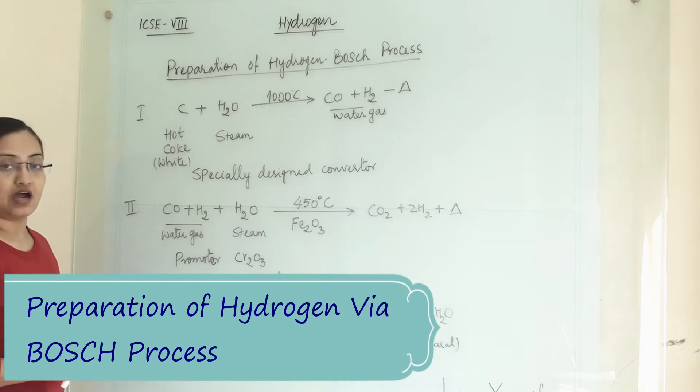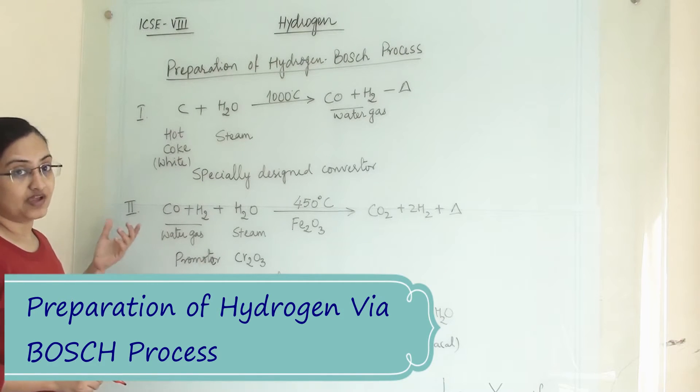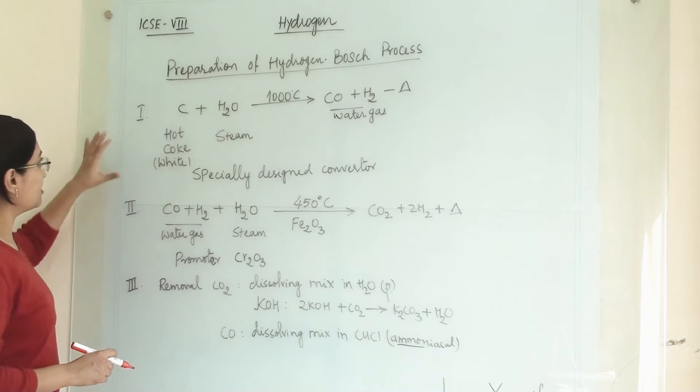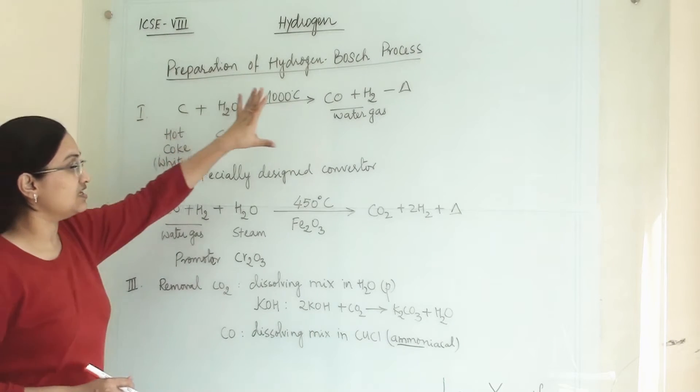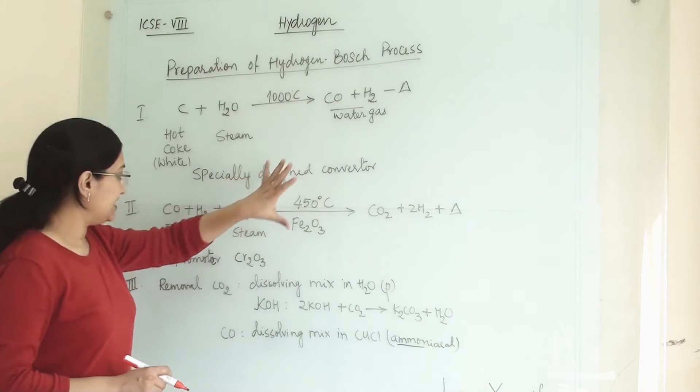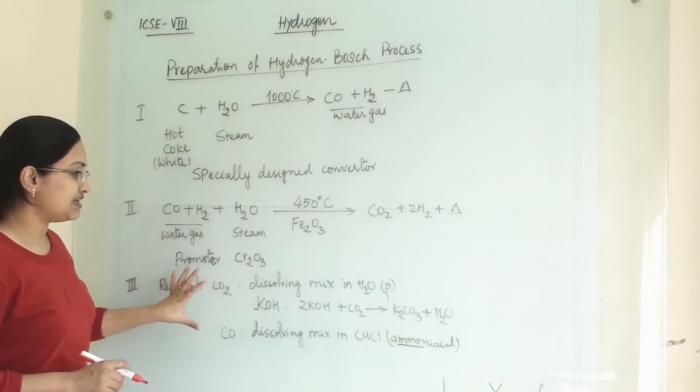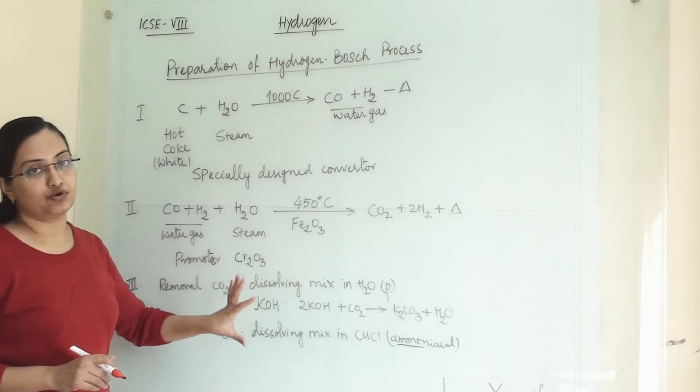Now let's see how we can manufacture hydrogen gas via Bosch process. In this process there are three steps. First we are making the water gas, then in second step we will get our product, and in third step we are removing the impurities from the product.